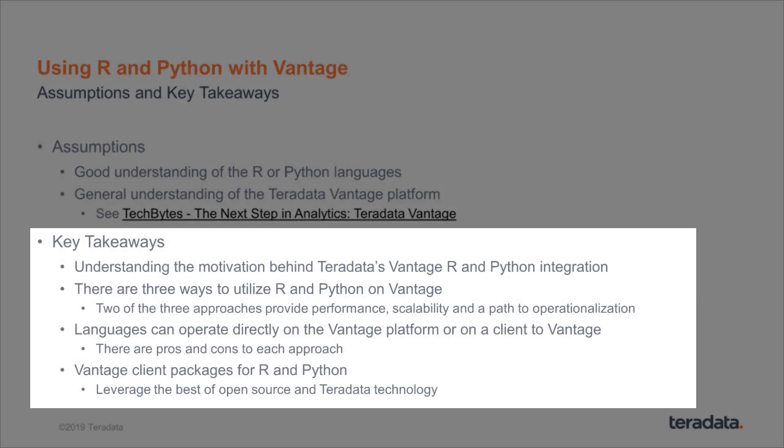The key takeaways from this Tech Byte include understanding the motivation behind Teradata's Vantage R and Python integration, understanding the three ways to utilize R and Python on Vantage, and the two ways Vantage provides performance and scalability to get you on a path to production. Additionally, understanding that R or Python can operate externally or directly on the Vantage platform, with pros and cons to each approach, and that the Vantage libraries for R and Python leverage the best of open source and Teradata technology.